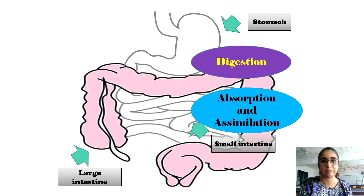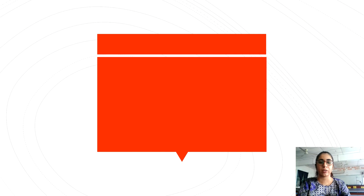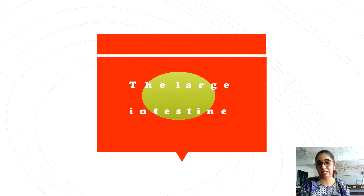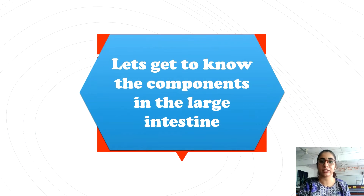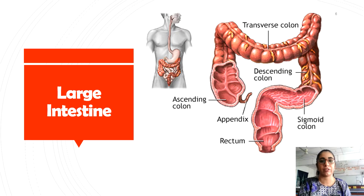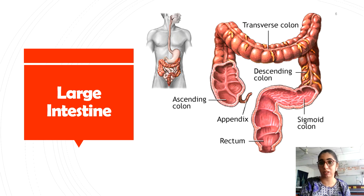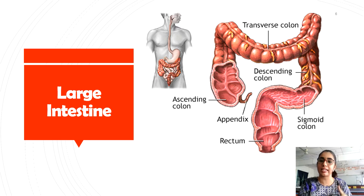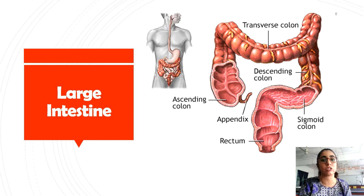Now let's get to know the large intestine. What are the components of the large intestine? From the last lesson we know that the small intestine is approximately six meters long. The large intestine is about 1.5 meters long. The large intestine, or colon, consists of the cecum, appendix, and four types of colon: the ascending colon, transverse colon, descending colon, and sigmoid colon. It also consists of the rectum.